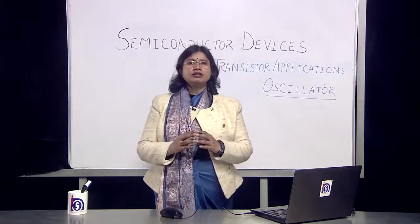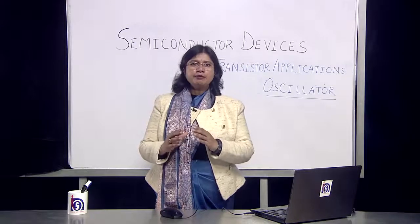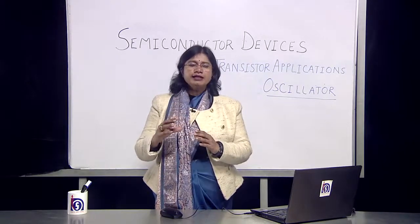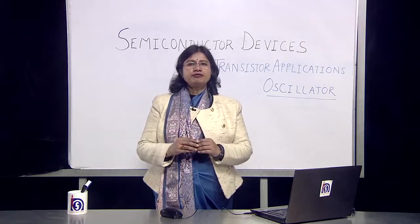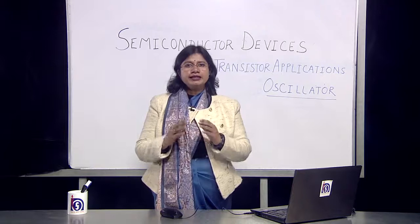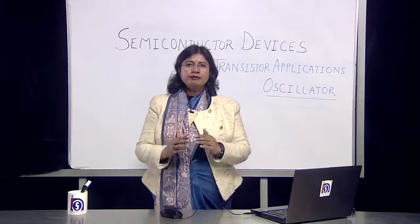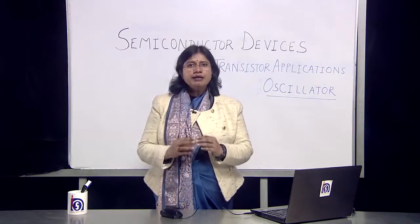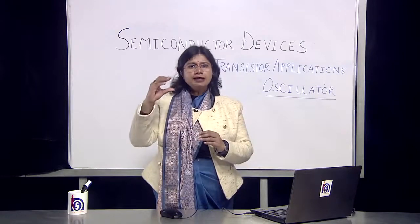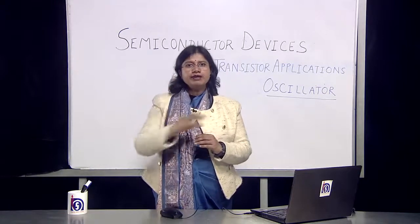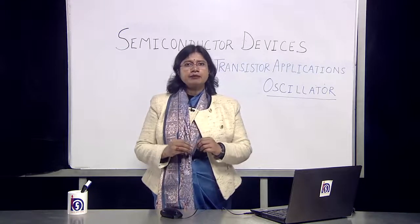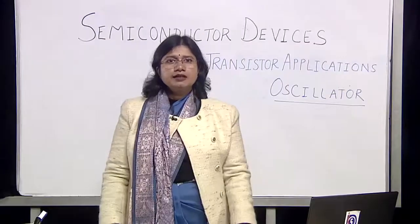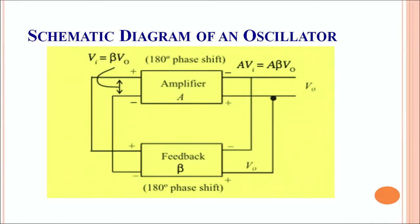An oscillator is capable of generating continuous electric oscillations. So apart from being an amplifier, it has an additional component — it is an amplifier with a feedback mechanism. A feedback mechanism means that some part of the output is fed back as input. Let's look at the schematic diagram of an oscillator.